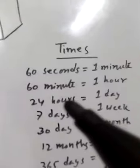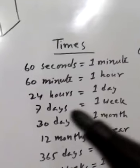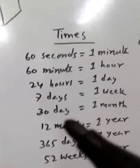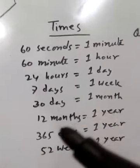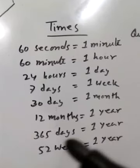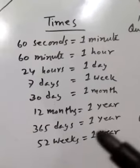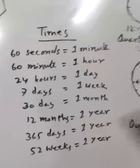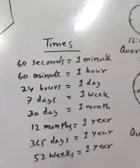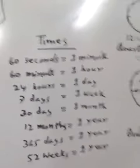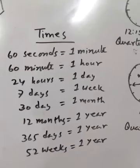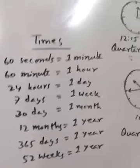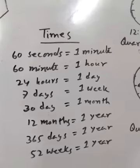60 seconds equals 1 minute. 60 minutes equals 1 hour. 24 hours equals 1 day. 7 days equals 1 week. 30 days equals 1 month. 12 months equals 1 year. 365 days equals 1 year. 52 weeks equals 1 year. You have to learn all of this.